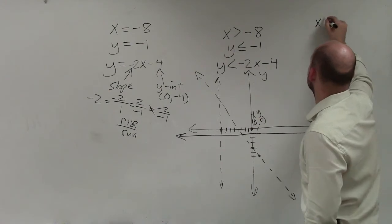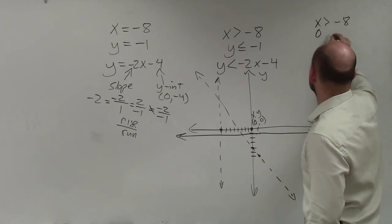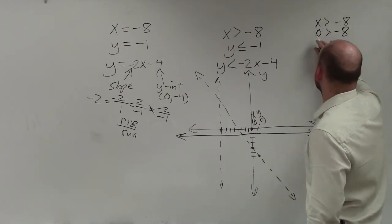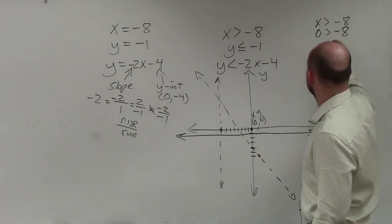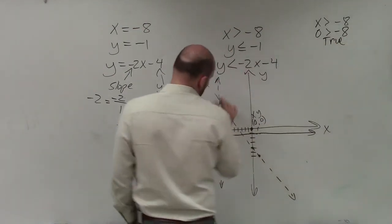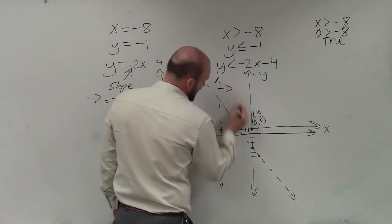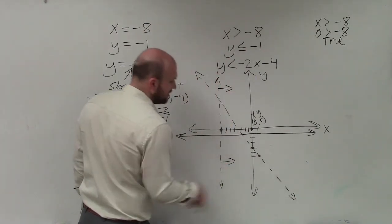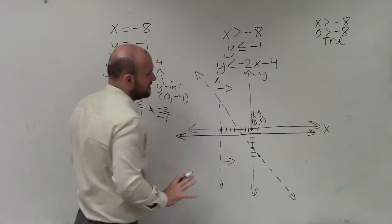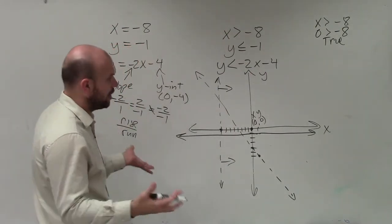So let's do x is less than negative 8. So now I plug in 0 in for x because I don't have a y. Is 0 greater than negative 8? That is true. So since it's true for this inequality, I'm going to shade towards the test point. All points that are on the side of the line of the test point are also going to be true.